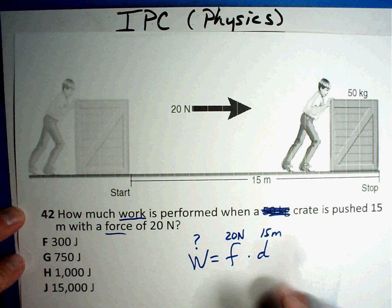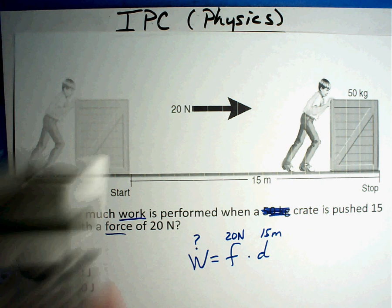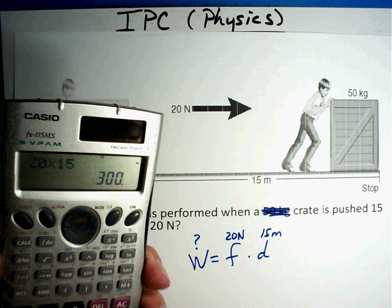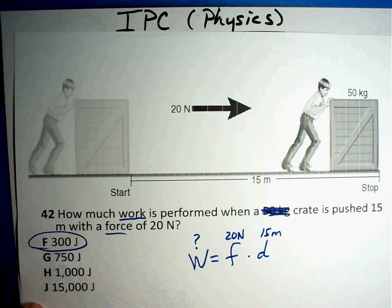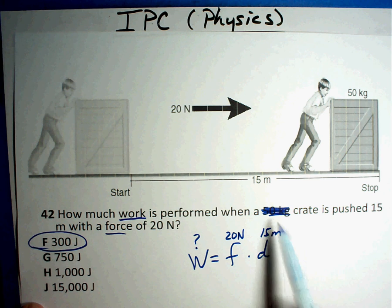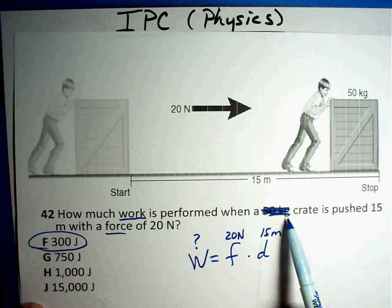So when you take 20 times 15 on your handy-dandy calculator, 20 times 15, the answer you get, 300. Got the answer. Tricks a lot of people because if you take that 300 times the 50, then you end up getting 15,000, and a lot of students pick this one. But the formula doesn't have a place for mass, and so it just, you don't need it.